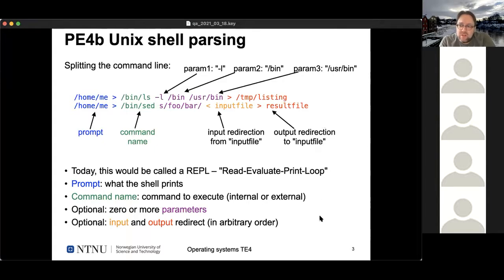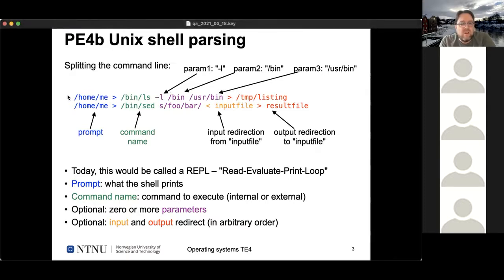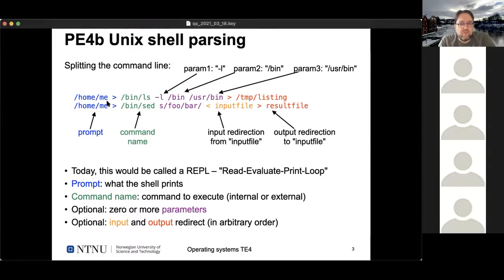Looking at parsing a Unix command line: a Unix shell first prints a prompt shown in blue, which signals the shell is ready and can show additional info like your current directory. Then you enter a command — the first thing on the command line is always the name of the command, followed by parameters shown in green. Commands without parameters are also valid; those optional parameters are shown in purple.